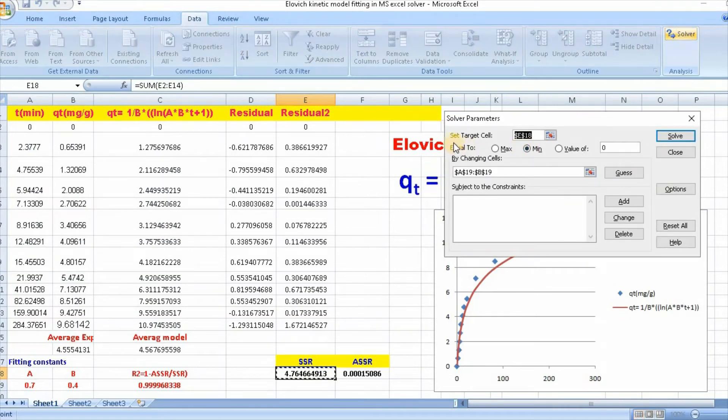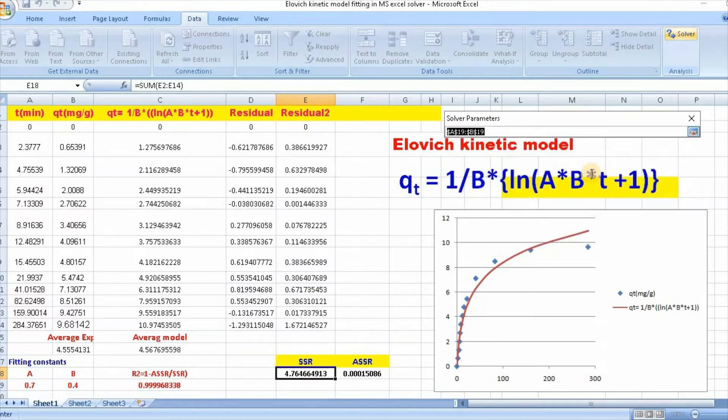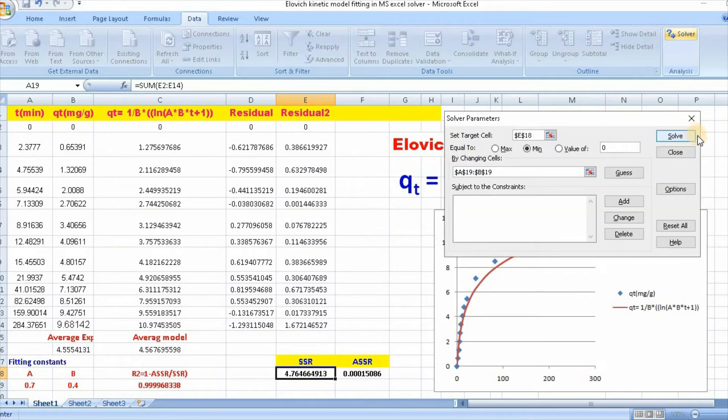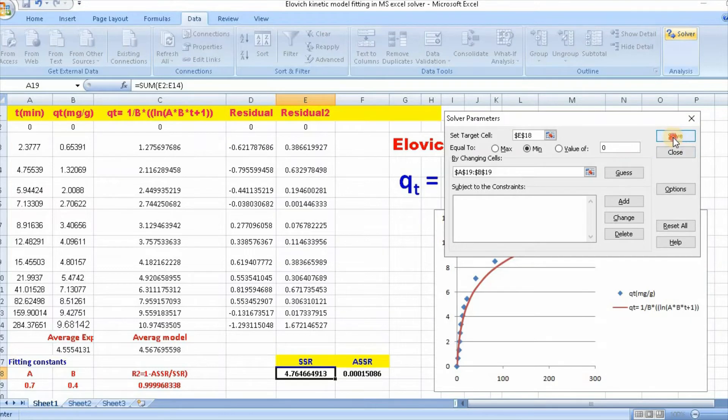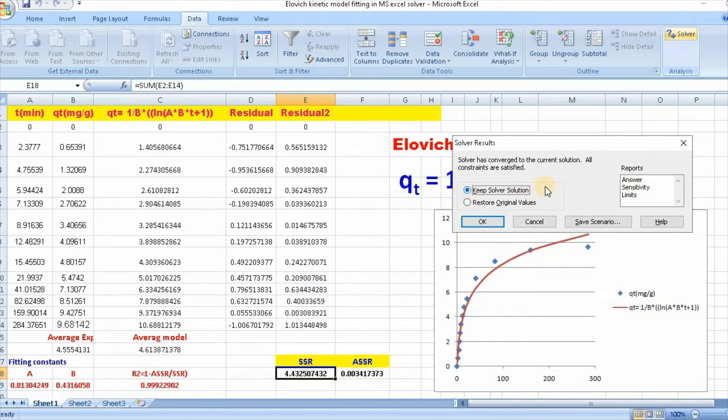Set target cell, the target cell is this. By changing cells, this is these two. Click here, then solve. Keep solver solution, then click OK.